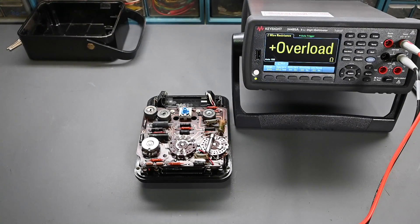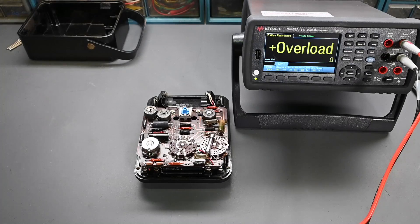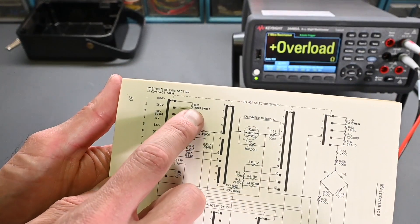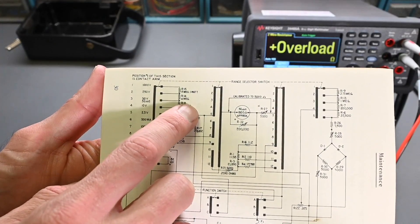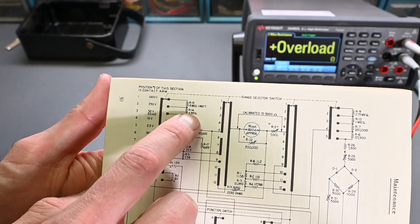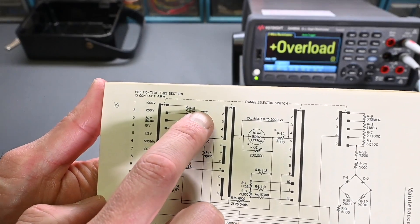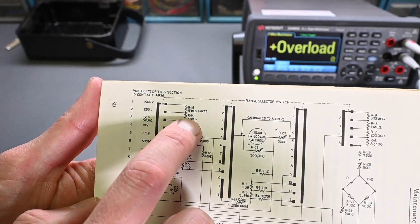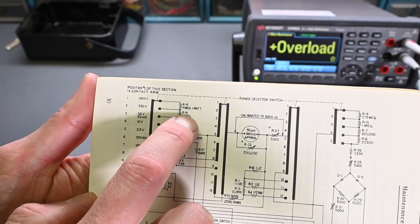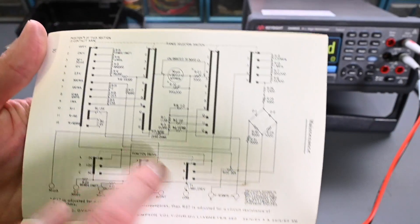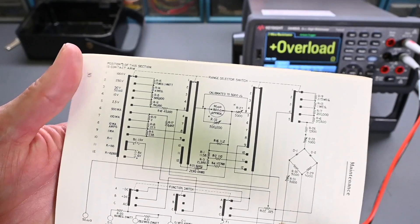So continuing on with the Simpson 260 meter repair, when I left off in part 1, I was testing these multiplier resistors, and I found that R14 and R15 had drifted way out of spec. So R14 is supposed to be 4 megohms, and R15 is supposed to be 15 megohms. R15 is a 1 watt resistor, R14 is a half watt resistor. There's no wattage mentioned next to R14, and the note down here says that when there's no wattage, it's half watt. And all of these are 1% tolerance resistors.